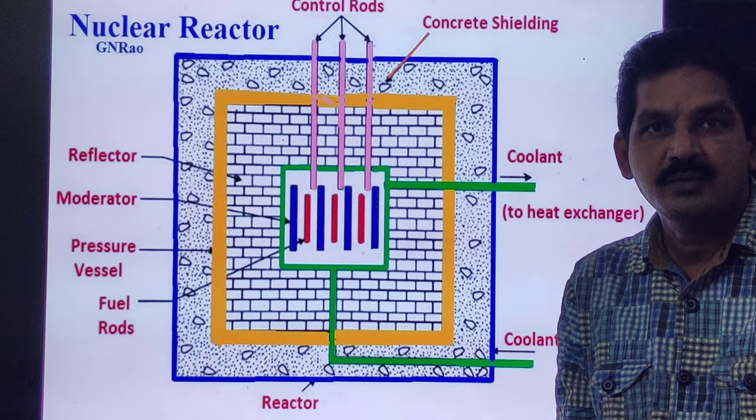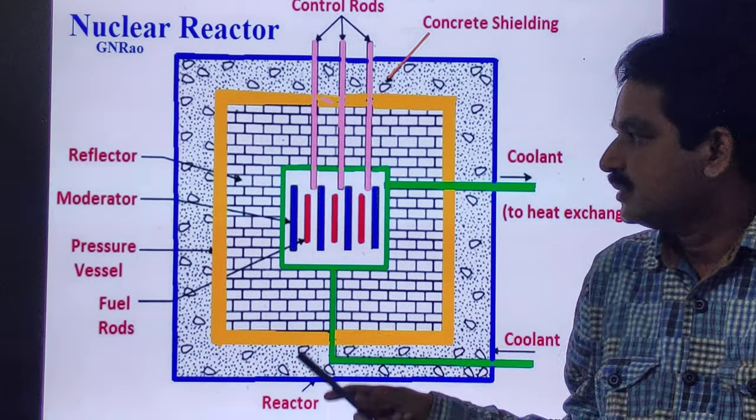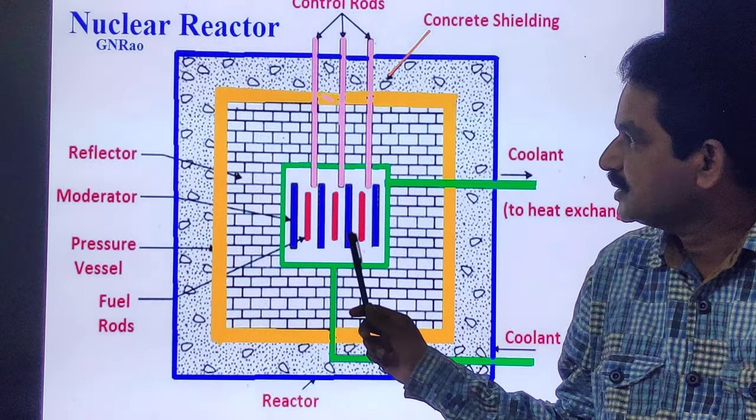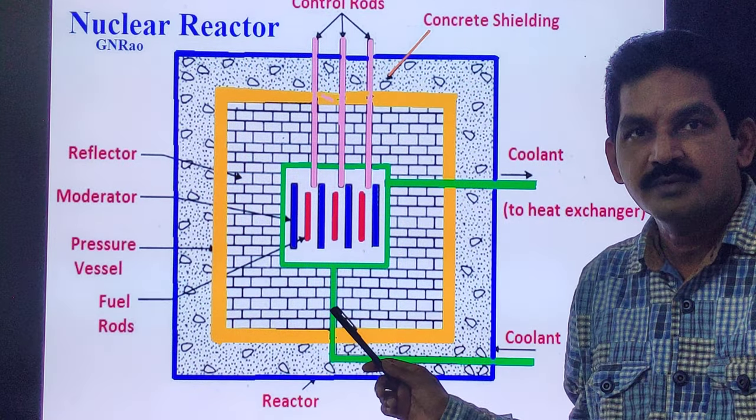The reactor core contains especially the nuclear fuel assemblies, the moderator, and control rods. The core of the reactor contains all the nuclear fuel assemblies and generates most of the heat.